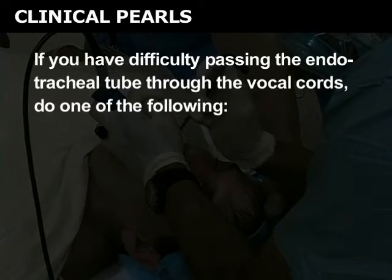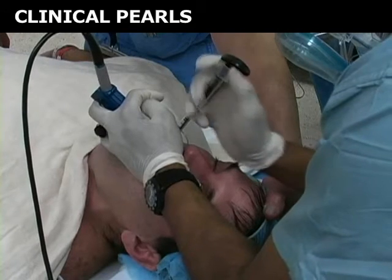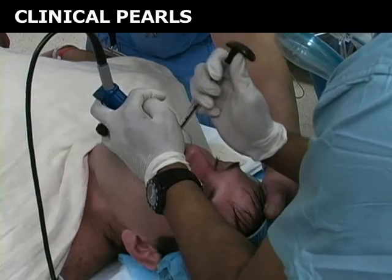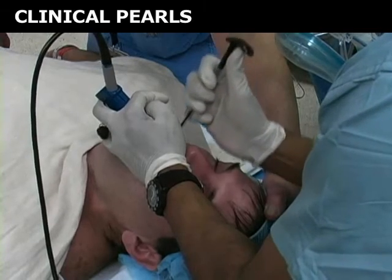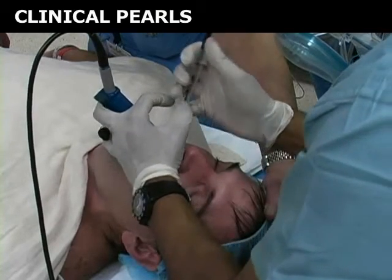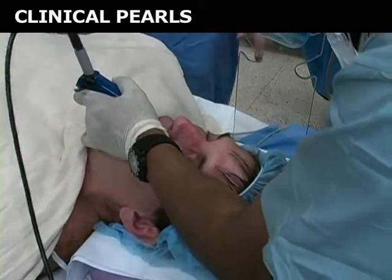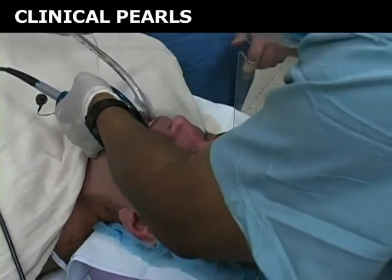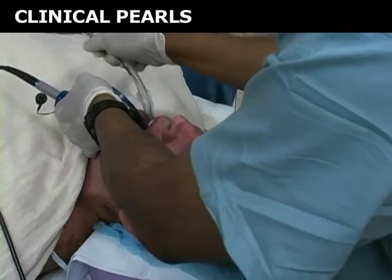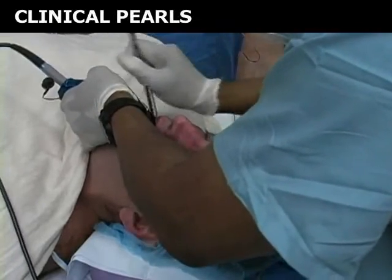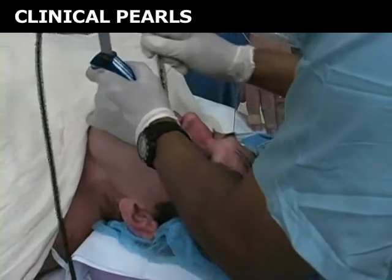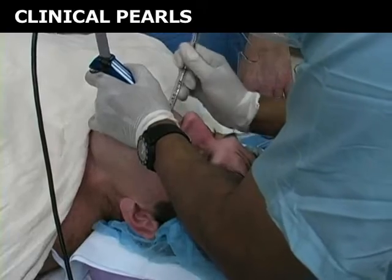If you have difficulty passing the endotracheal tube through the vocal cords, do one of the following: withdraw the stylet approximately 5 cm to aid the passage of the tube tip through the cords, or pull the laryngoscopy blade out of the mouth 2 cm to enhance your view of the glottic opening and increase the space available to maneuver the endotracheal tube.